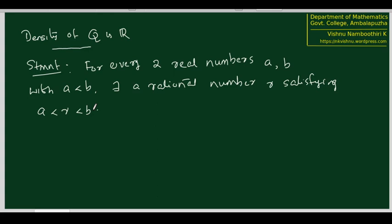We are going to divide the proof of this statement into a few cases depending upon the sign of A and B. As the first case, we will assume that A and B are non-negative. So assume that 0 less than or equal to A less than B, that means A and B are non-negative. The other two cases are: A is below 0 and B is above 0, that means A less than 0 less than or equal to B; and the other case is that A and B are both below 0. We will deal with these cases later.